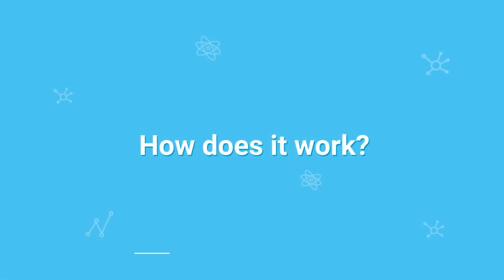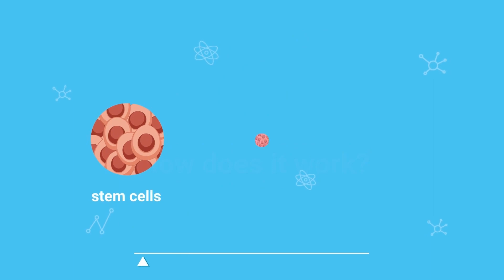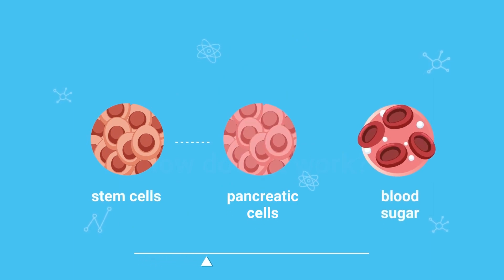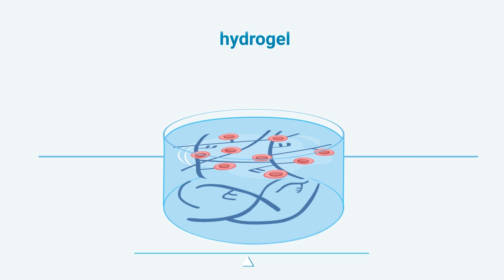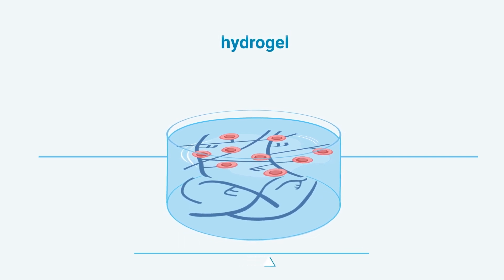How does it work? Enlight will first transform adult stem cells into the type of pancreatic cells that regulate blood sugar. These cells will then be placed in a hydrogel, a 3D environment that mimics the structure of human pancreas to improve survival.